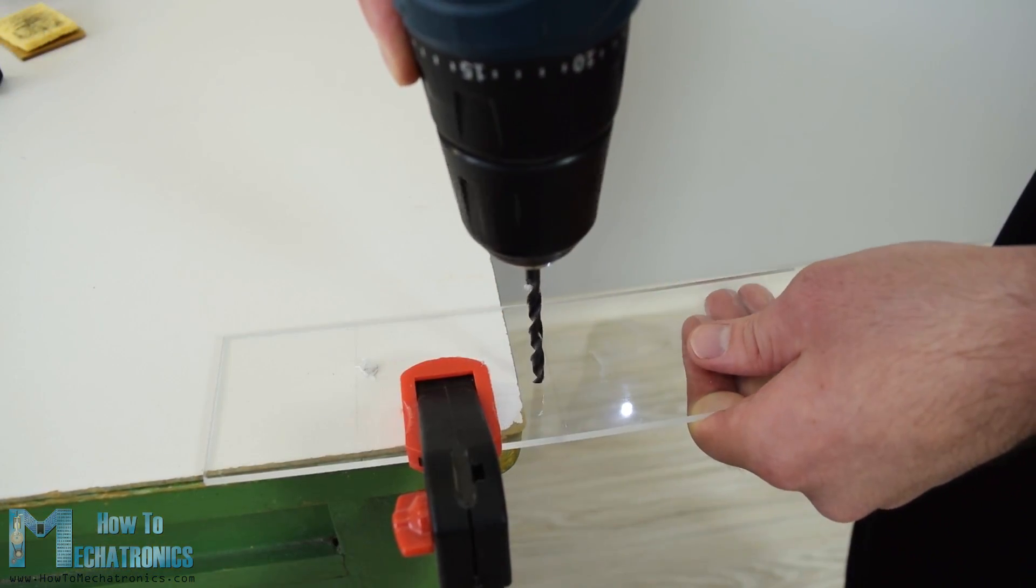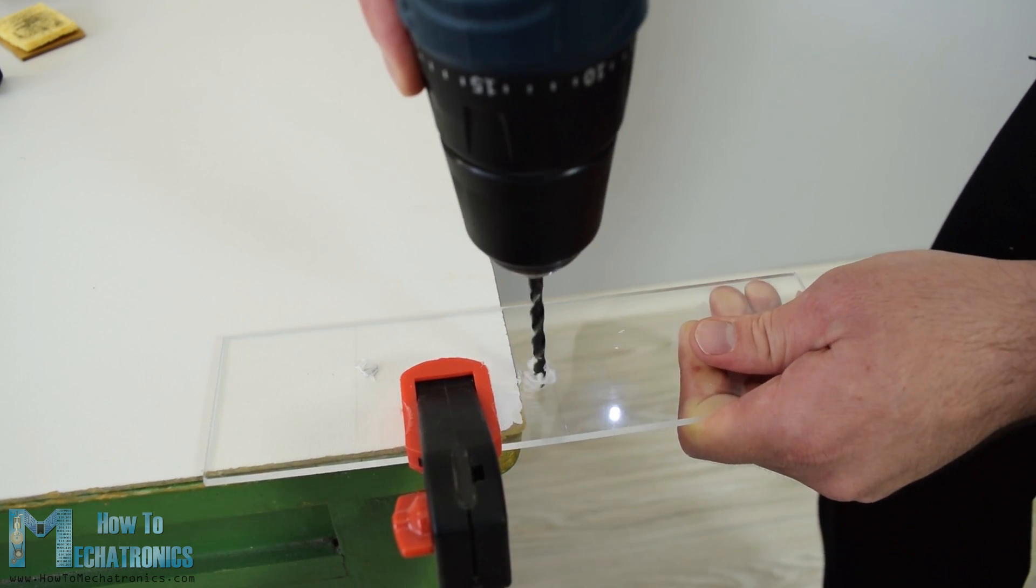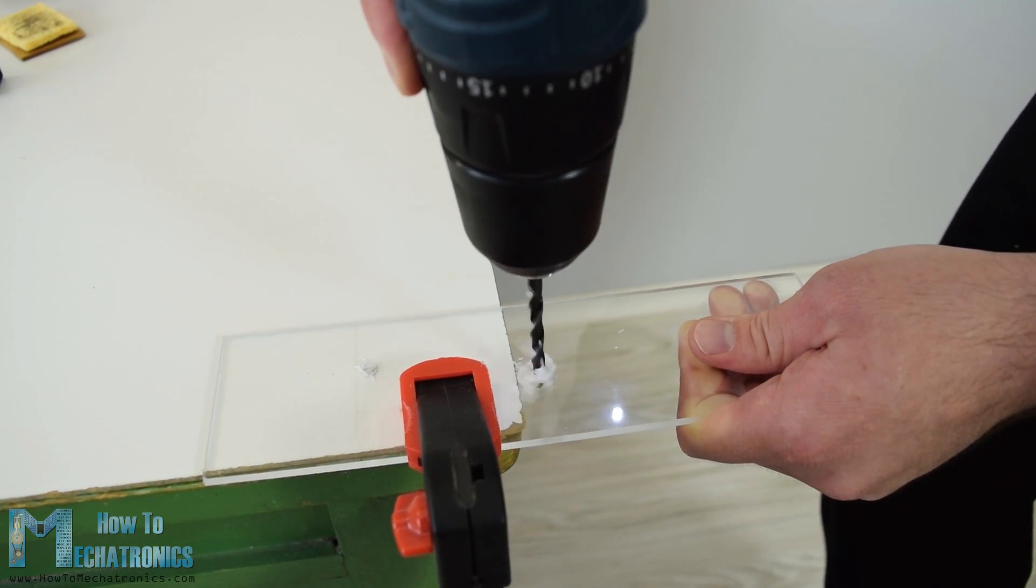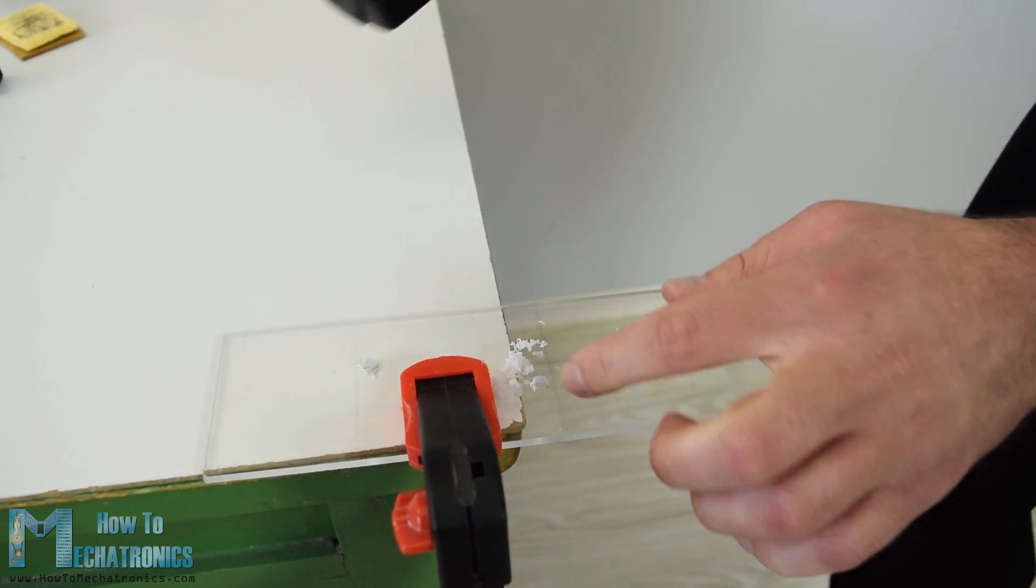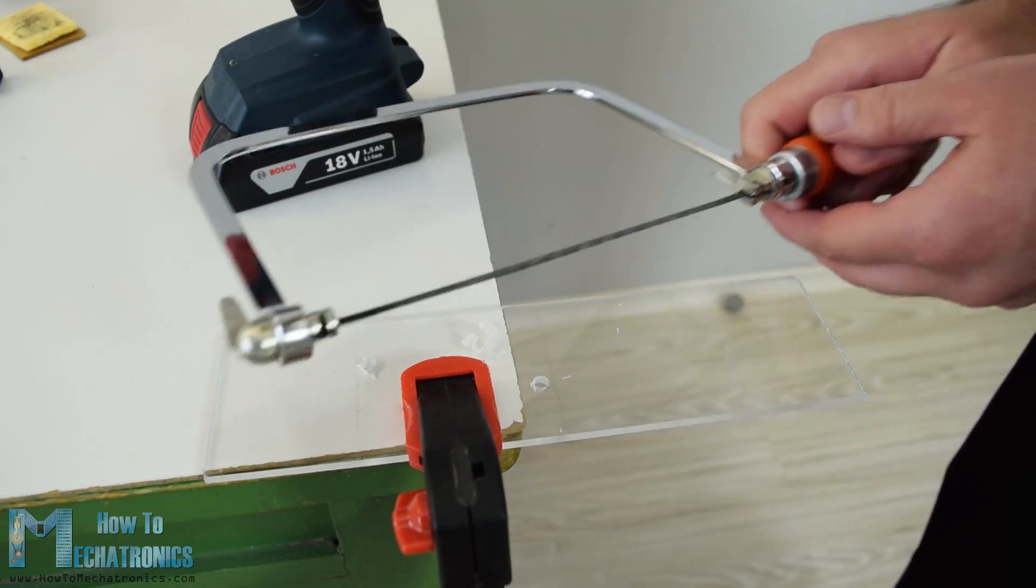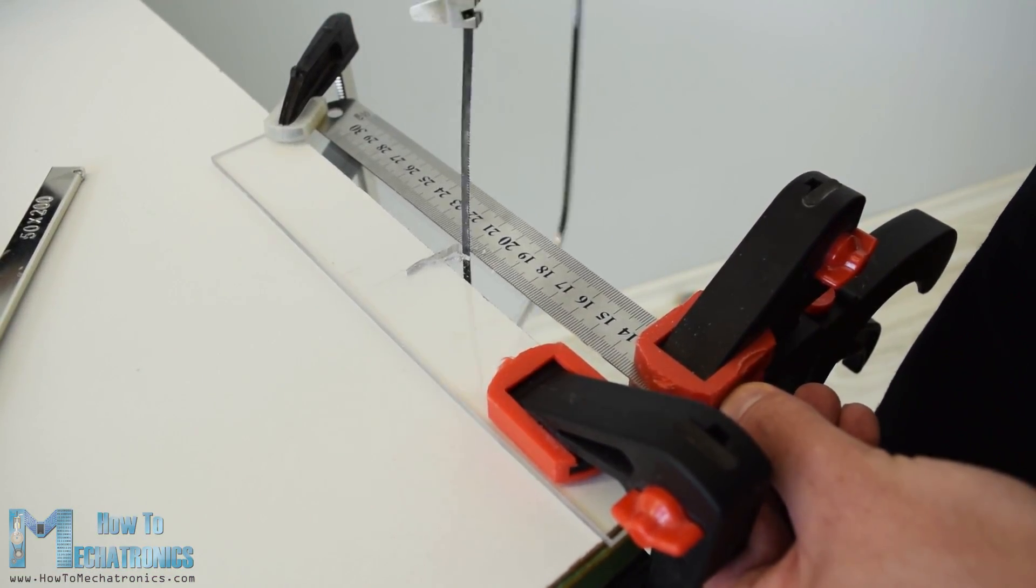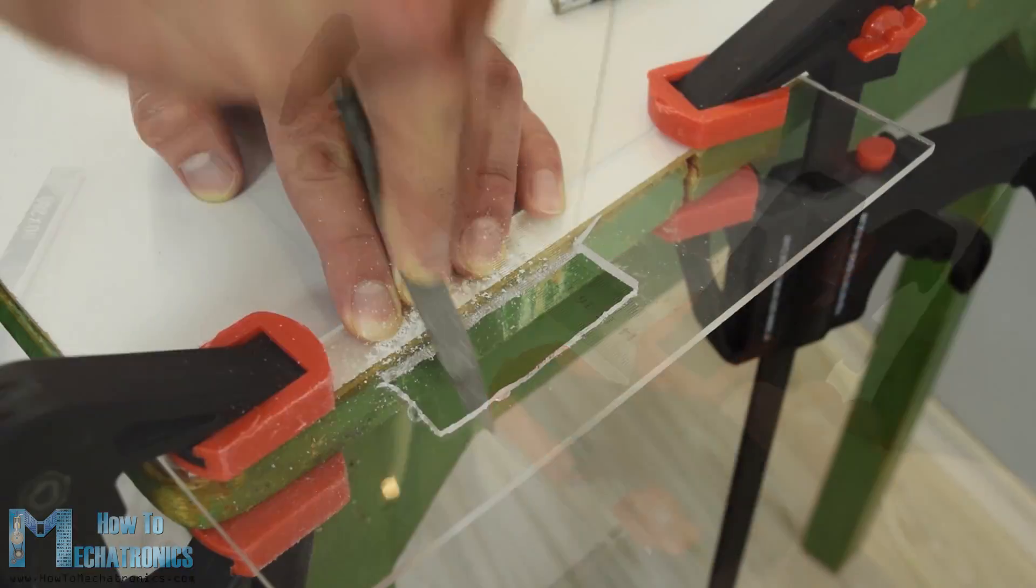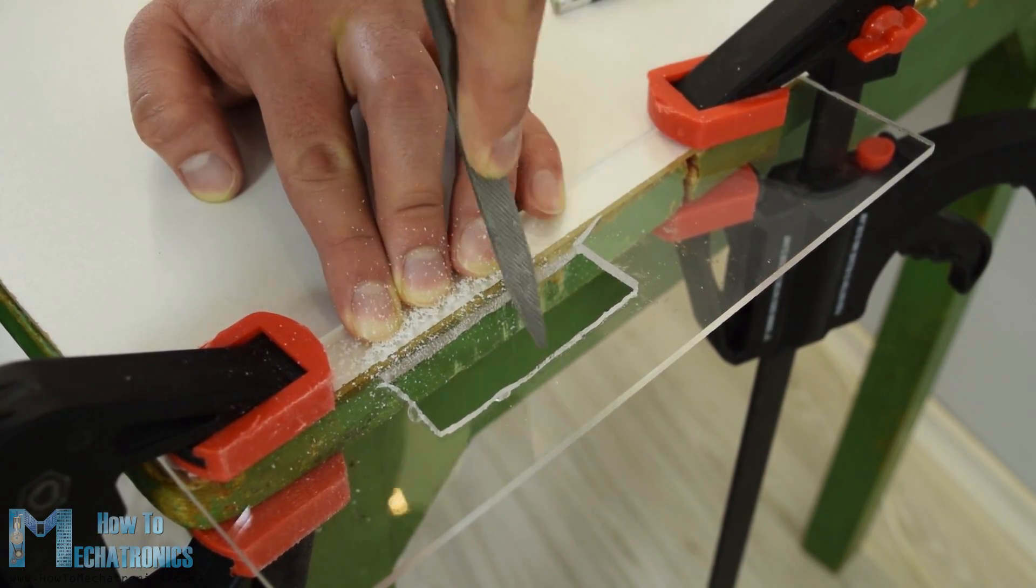Then I had to make an opening for the LCD on the top panel of the case, which is actually 4mm thick because in that way it will fit better with the LCD. So first I made two holes with a drill and then inserted a hacksaw through them. Using the hacksaw I roughly made the opening and then using a rasp I made fine straight lines so that the LCD can tightly fit.